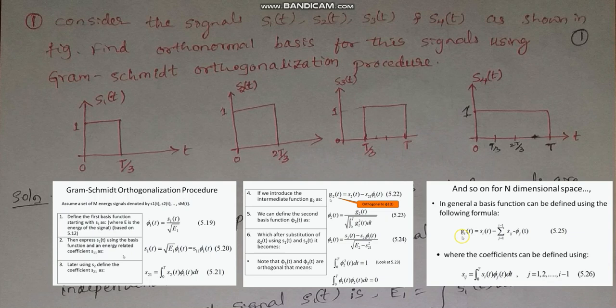In this lecture we are going to have a discussion on a problem based on Gram-Schmidt Orthogonalization Procedure. Here there are four signals given: S1, S2, S3 and S4. We need to find out orthonormal basis functions for uniquely representing these signals. So, let us revise once the steps involved.